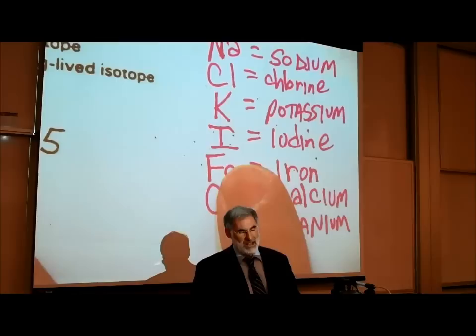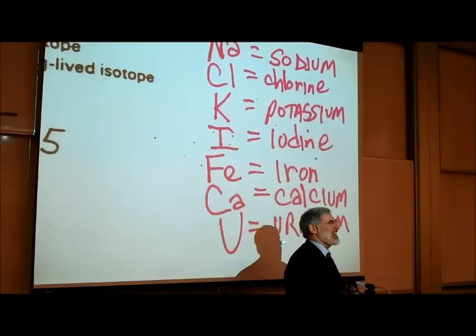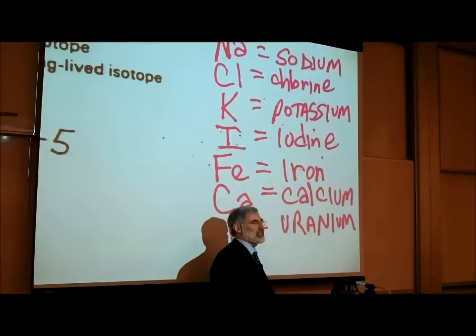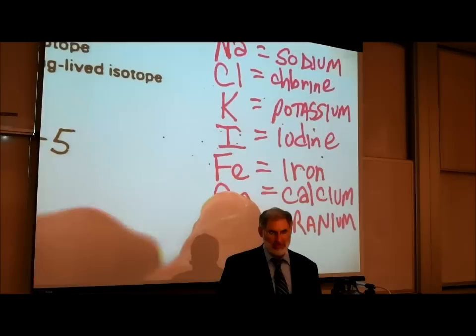Fe is iron. They could not use I for iron because they'd already used I for iodine. So they asked what the ancient Greeks called iron — they called it ferrous. From ferrous, we got Fe.